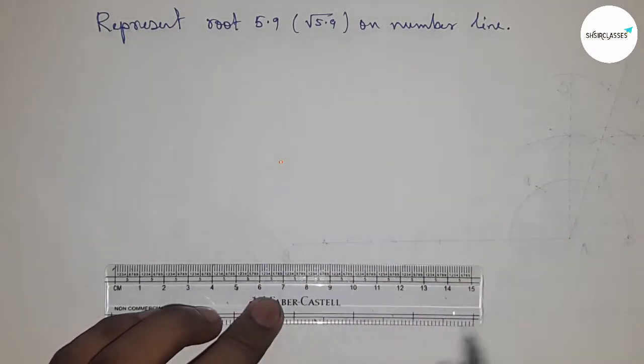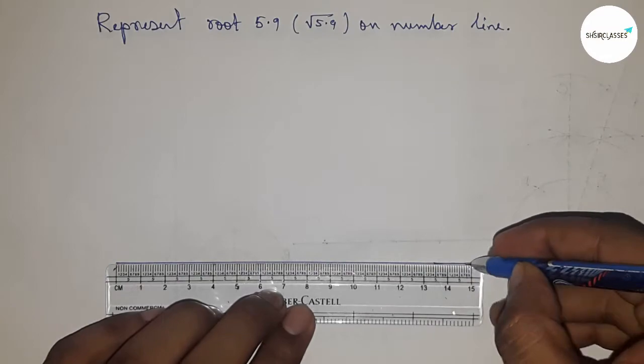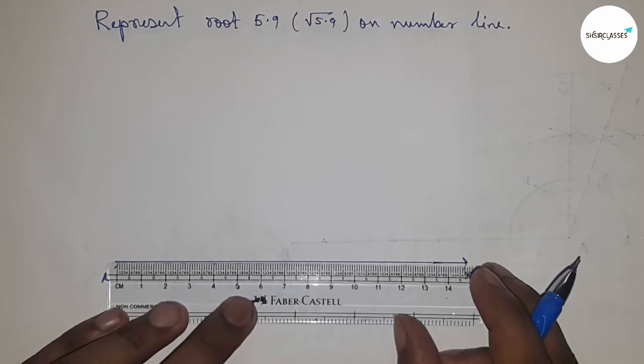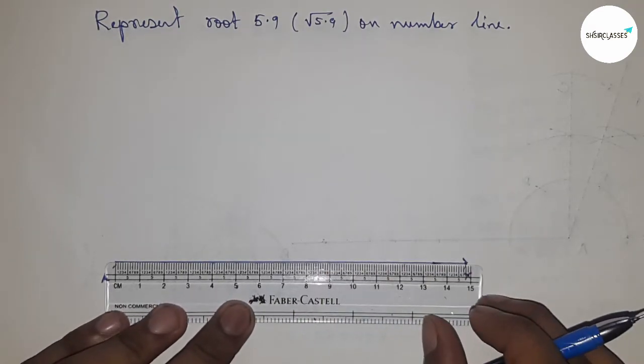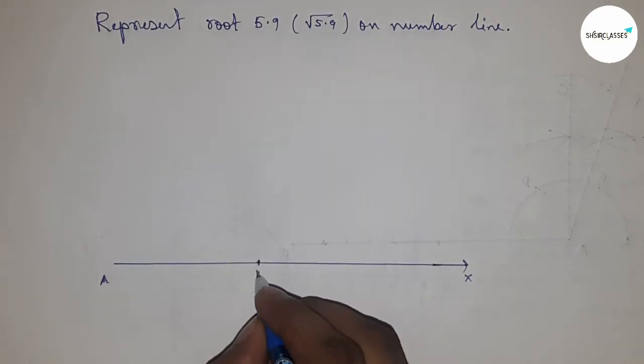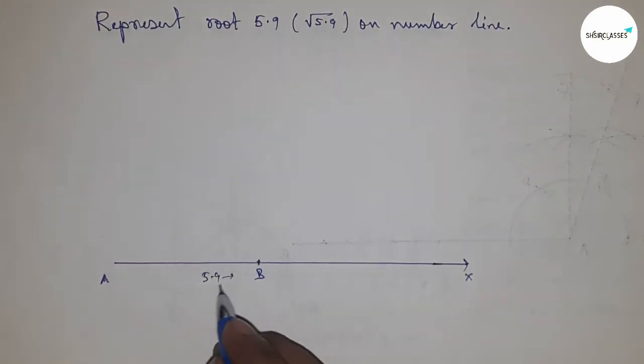First of all, draw a line of any length and denote it by AX. Next, take a length of 5.9 centimeters using a scale. This is point B, so AB is 5.9 centimeters.